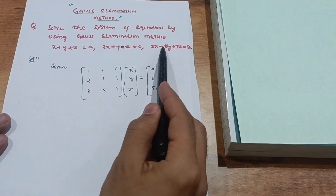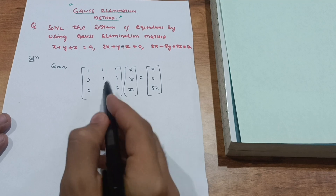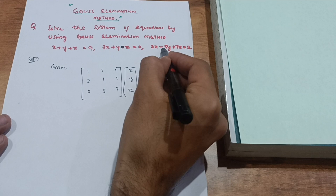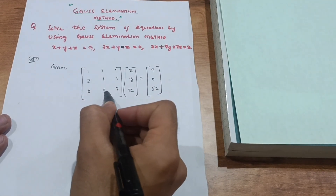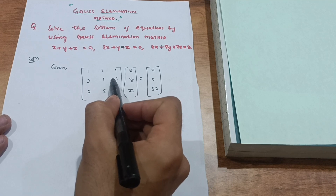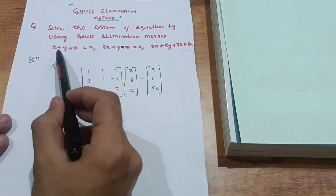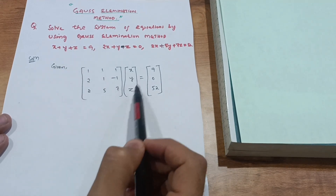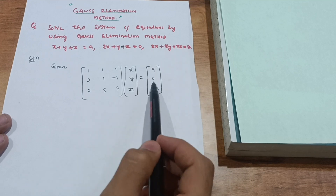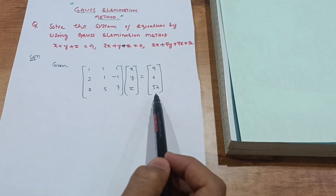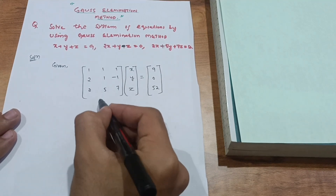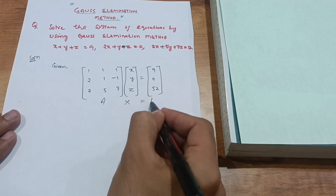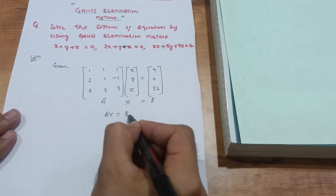The third equation 2x minus 5y plus 7z gives coefficients 2, minus 5, 7. Then you write the variables x, y, z as a column matrix, and the right-hand side values 9, 0, 52 form another column. This is the augmented matrix — written as Ax equals b, where A is the coefficient matrix, x is the variable column, and b is the constants column.